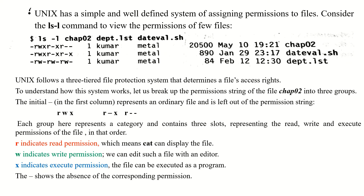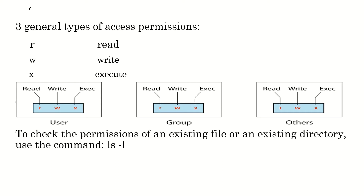This category is often referred to as 'the world'. The file is not world-writable. This figure shows the three general types of access: r indicates read, w indicates write, x indicates execute, for users, group, and others. To check the permissions of an existing file or directory, use the command ls -l.